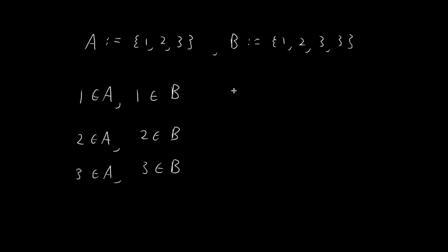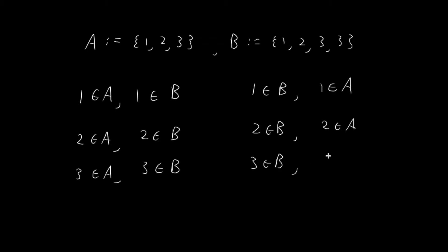Now we work the other way around — we show that every element in B is also an element in A. Reversing the roles of A and B: 1 is an element in B, and it's also an element in A. 2 is an element in B, and it is also an element in A. 3 is also an element in B, and 3 is also an element in A. So for every element in B, it is also in A. This allows us to conclude that A is indeed equal to B.